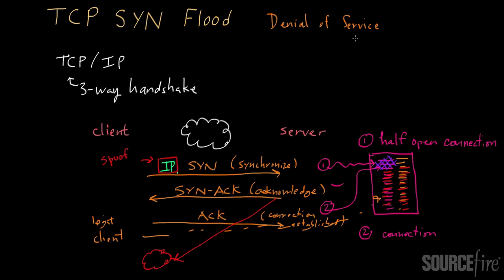This attack is a classic one, and there are some countermeasures in place for dealing with it. The reason to highlight it is that many denial-of-service attacks try to leverage a situation in which a server must maintain state and allocate memory for that state. Also, many denial-of-service attacks involve IP address spoofing. By understanding these core elements, you may be able to recognize other situations and protocols in which similar attacks can be mounted.